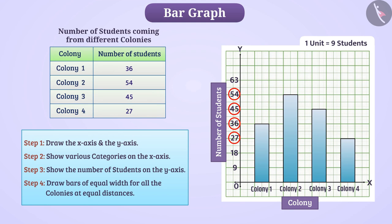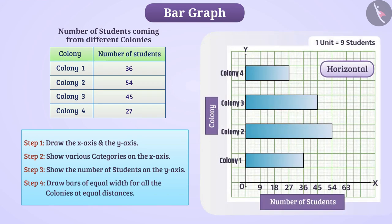Thus, we have drawn the bar graph to show the number of students coming from different colonies in the school. This is a vertical bar graph. We can also draw it horizontally like this.